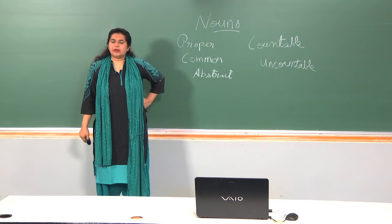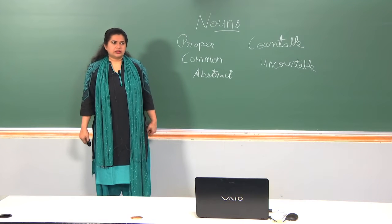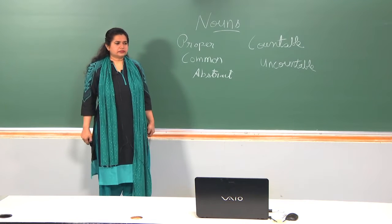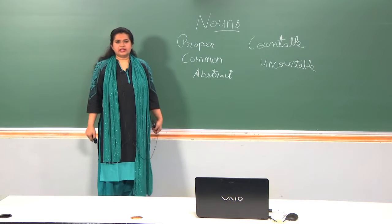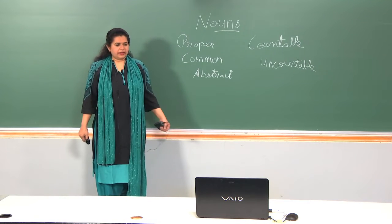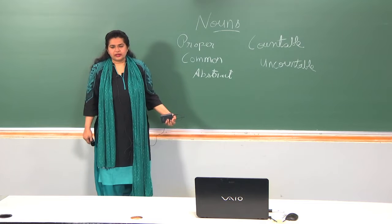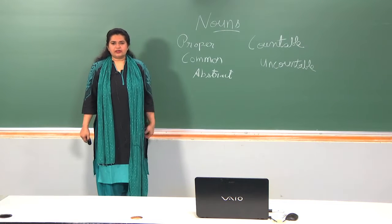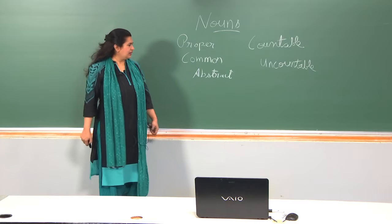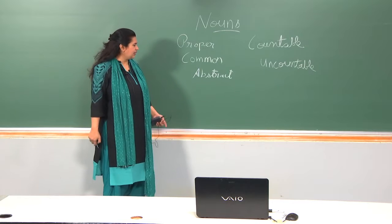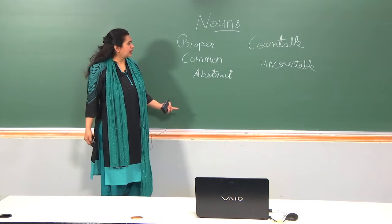In English, we generally use abstract nouns to express feelings and emotions — love, hate, anger, excitement. These things cannot be touched. Heat also cannot be touched and has no shape or form, so it becomes more abstract.